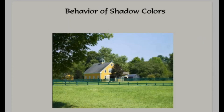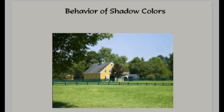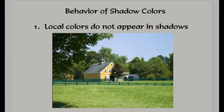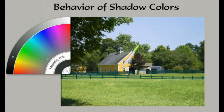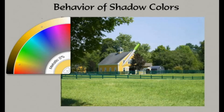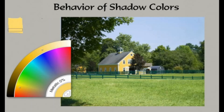Now that we've examined the major characteristics of shadow values, let's also examine the behavior of shadow colors. One thing we can expect is that local colors do not appear in shadows. Let's do a little analysis of this farmhouse sitting in a pasture. We'll bring out the color reader and read the local color — the yellow in that house. This is how we read the local color, and we'll give you a sampling of that local color here so we can isolate it and see clearly what's going on.